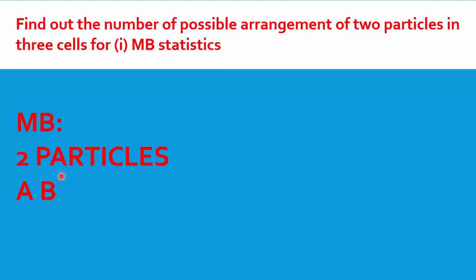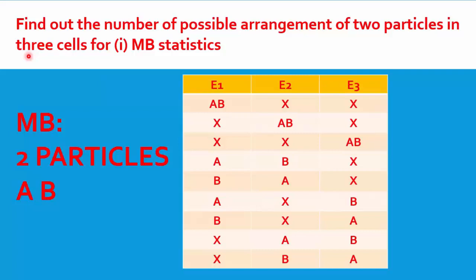The first particle is A and the second particle is B, because they are distinguishable — you have to distinguish between these particles. We have three cells or three quantum states, or three energy levels: E1, E2, and E3. So you have three cells and two particles. The number of ways you can arrange these particles gives you the number of microstates.